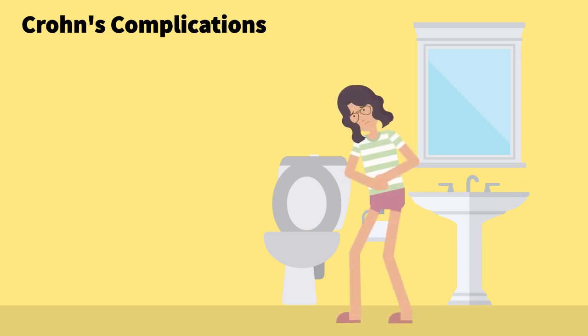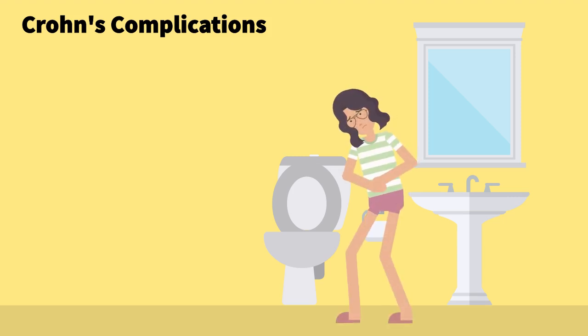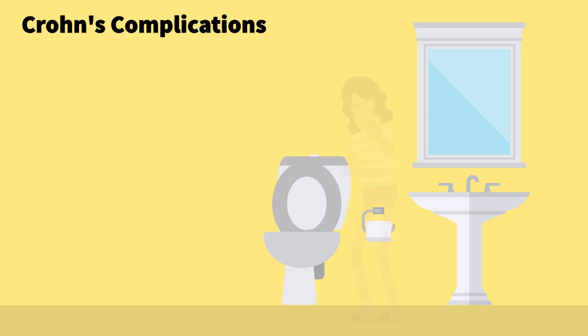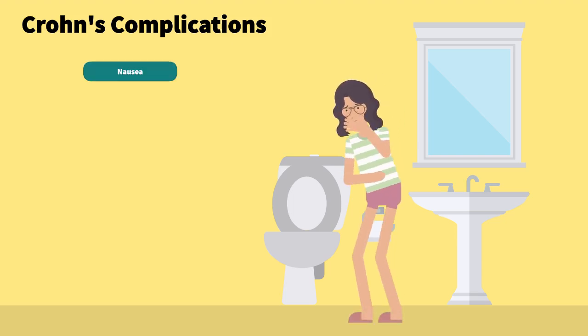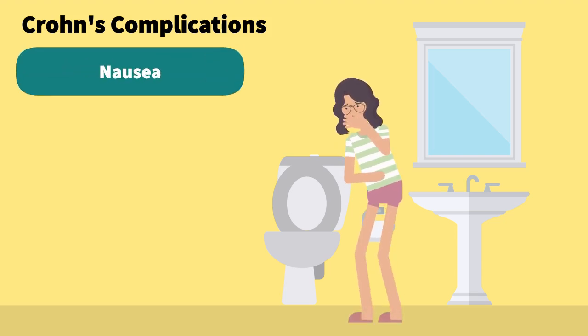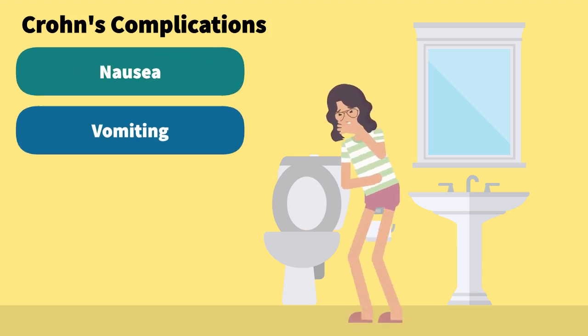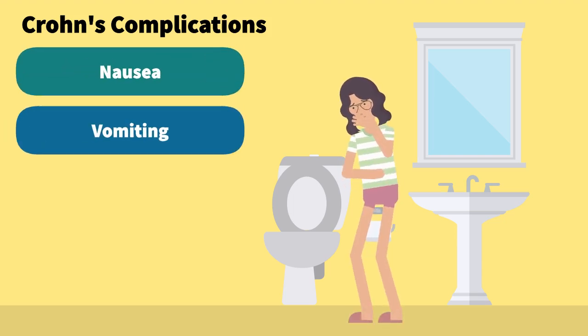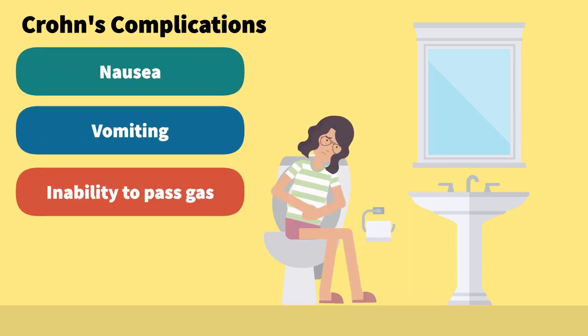Complications of Crohn's disease can include areas of narrowing, which can cause obstructive symptoms such as nausea, vomiting, and the inability to pass gas.